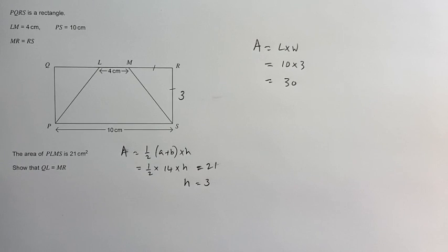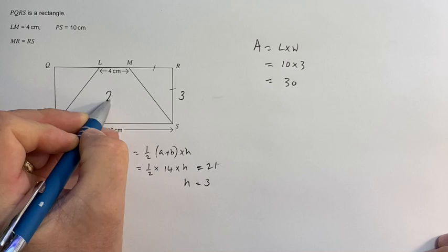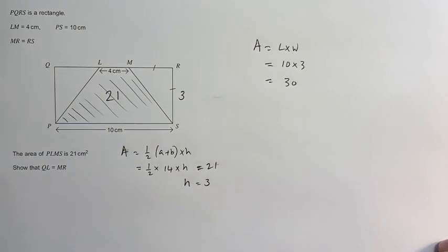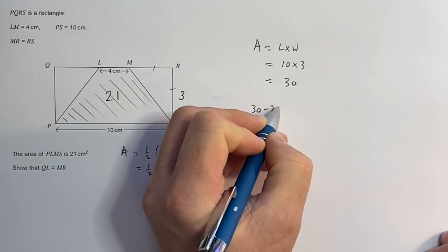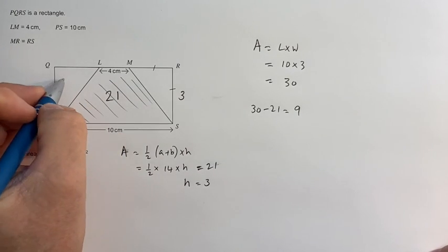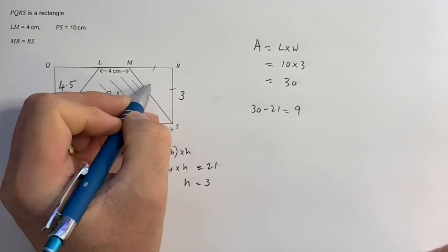Now the reason why I work out that area is because we already know that this area is 21. If I take 21 from 30, that leaves us with 9, which means that each of these triangles must be 4.5 each.